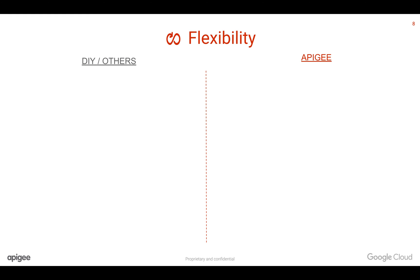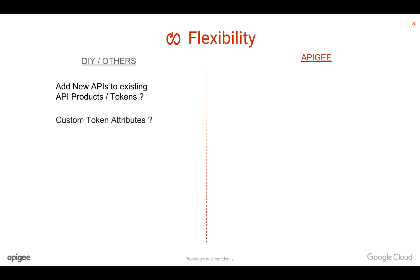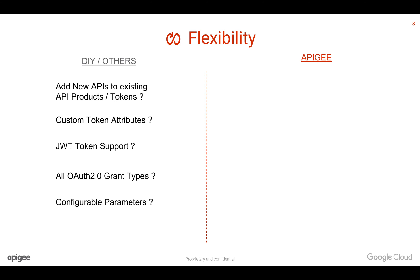The last advantage is flexibility. Even if you implement and scale by investing time, energy, and resources, can you add new APIs to existing tokens seamlessly? Can you add custom token attributes? Can you support JWT tokens that carry information? Can you support all different OAuth 2.0 grant types? Can you do this as configuration instead of coding, so that you can flexibly change the parameters? Can you reuse this across different API proxies?